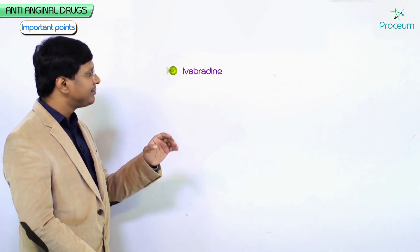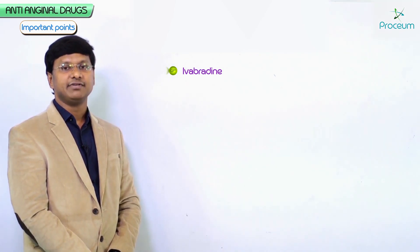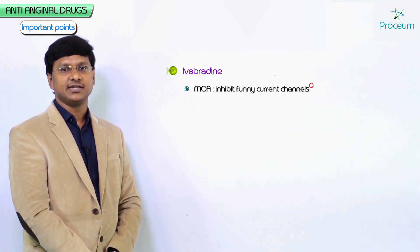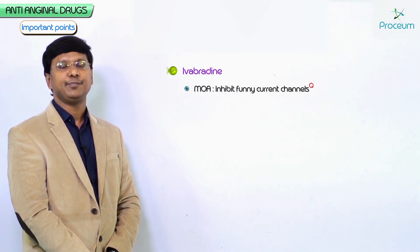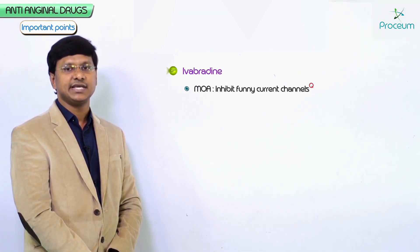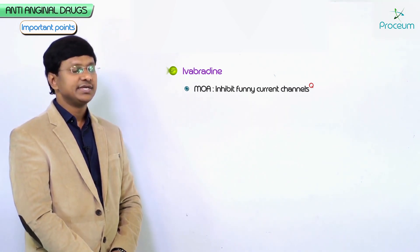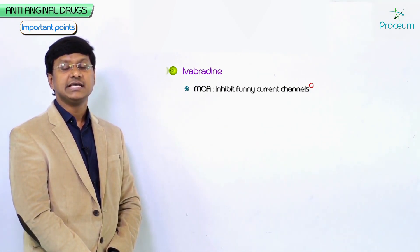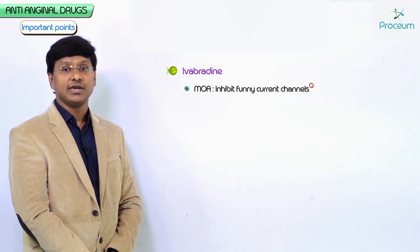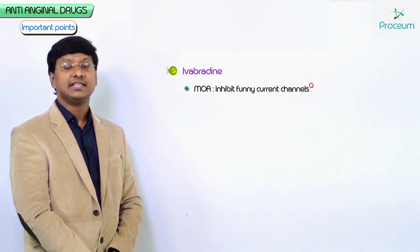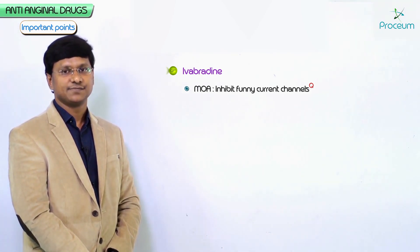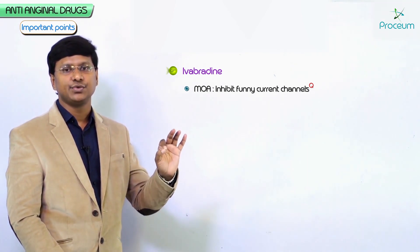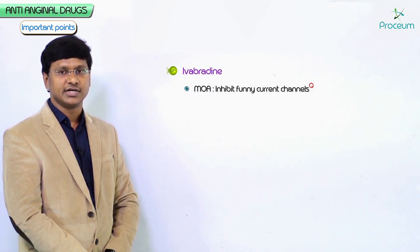Ivabradine inhibits the funny current channels, which are required for depolarization of cells in the SA node that maintain its automaticity. The mechanism of action of ivabradine — inhibiting the funny current channels — is a very important MCQ point about anti-anginal drugs.